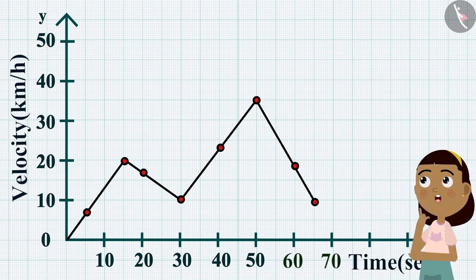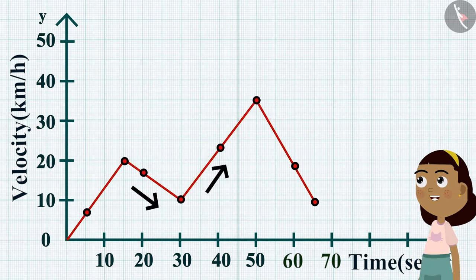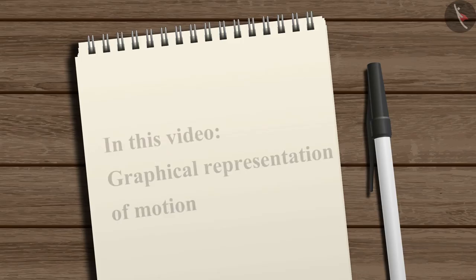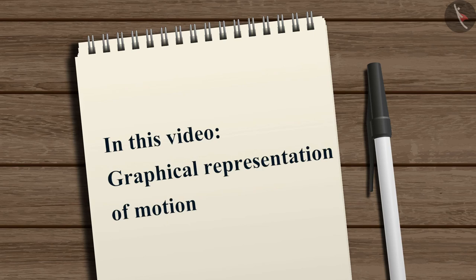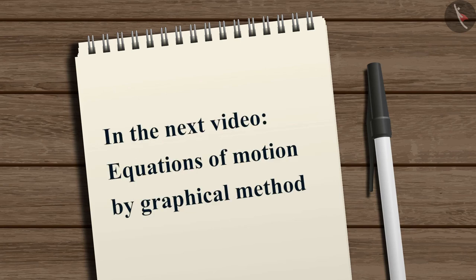We can also determine the acceleration of an object by calculating the slope of its velocity-time graph. In this video we learned how to represent the motion of an object on a graph. In the next video we will learn about equations of motion by graphical method.